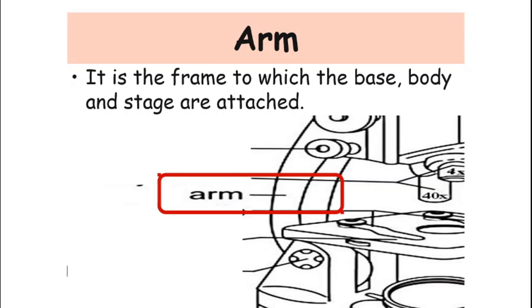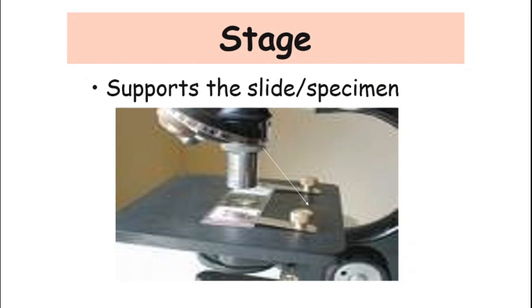Next is the arm. The arm is the frame to which the base, body, and stage are attached. It also serves as the handle where the user can carry the microscope from one location to another. Next is the stage. The stage supports the slide or specimen — it is the flat platform where the slide containing the sample is placed.